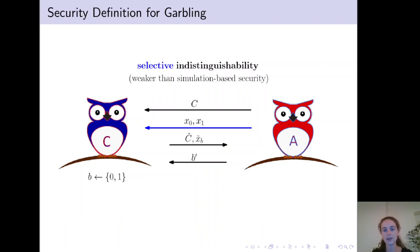In the adaptive setting, the adversary first receives the garbling of the circuit and then can adaptively choose inputs X0 and X1.